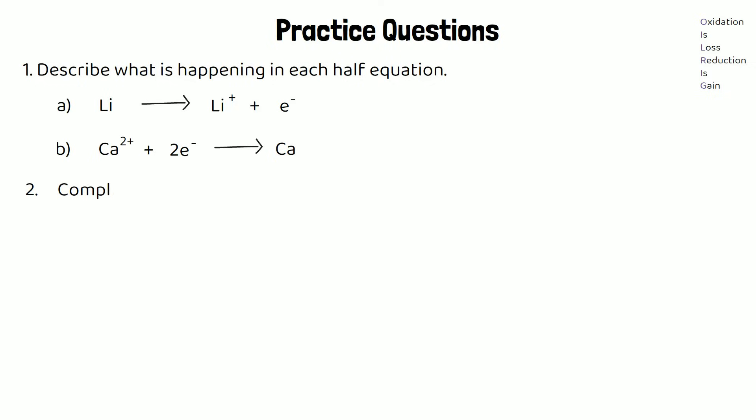For the second type of question, you might be asked to complete the half equation. They will leave a gap in front of the electrons and you have to write down how many electrons you think are needed. So P plus a certain number of e- makes P3-. How many e- would we need? And for part B, 2O2-, that's two ions, produces an O2 molecule and a certain number of e-.